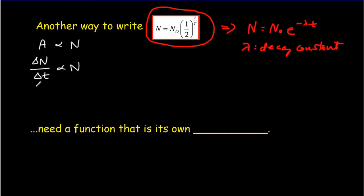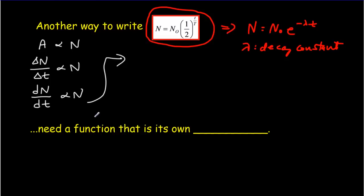If you're familiar with calculus, you probably know that you could write that as: the derivative of N with respect to t will be proportional to N. Whenever you have a proportional relationship between two quantities, you can always write it as an equality by putting in a proportionality constant. So dN/dt would be equal to some constant — the decay constant — times the number of particles.